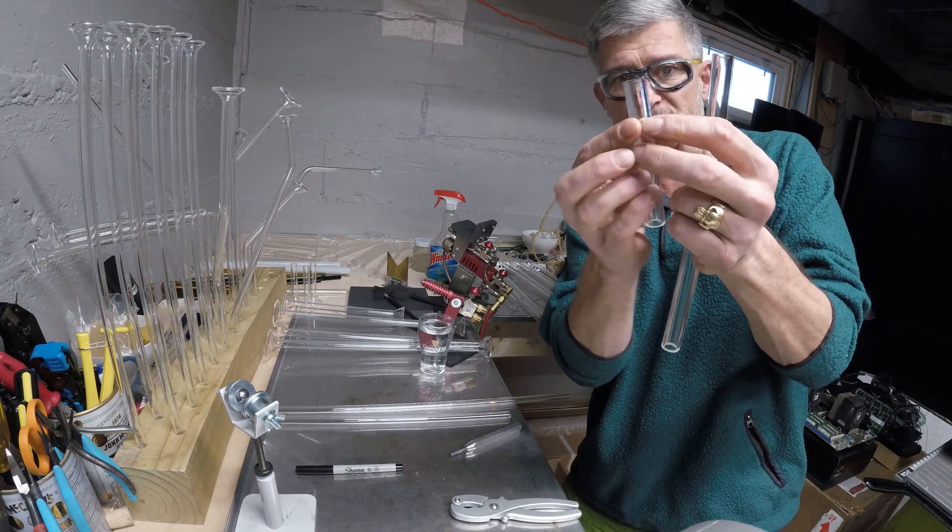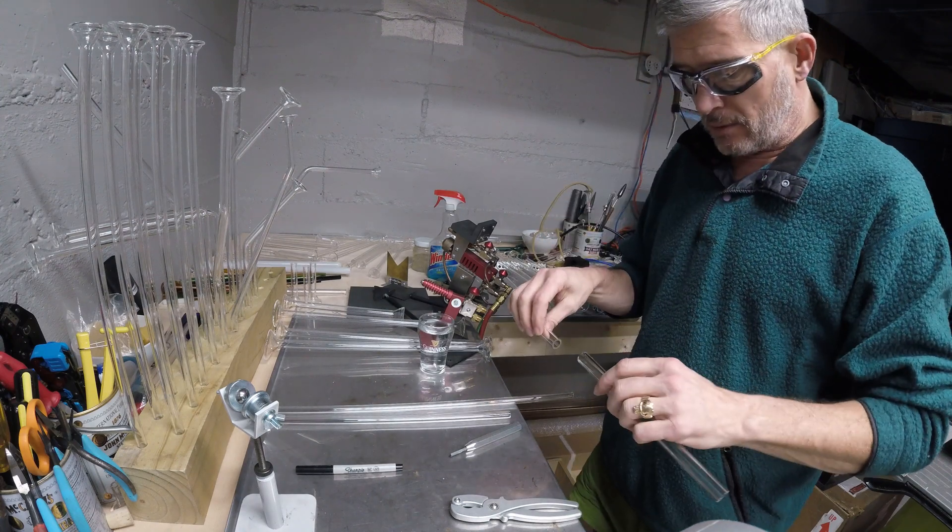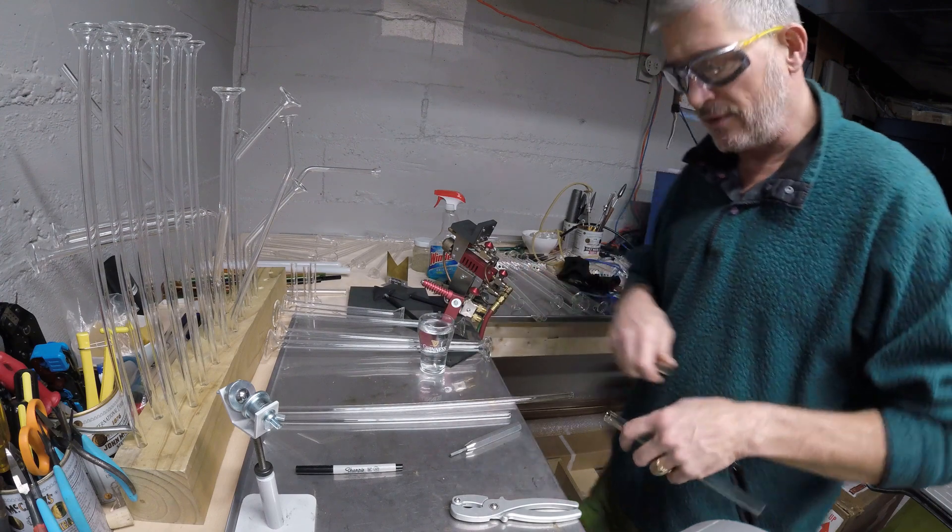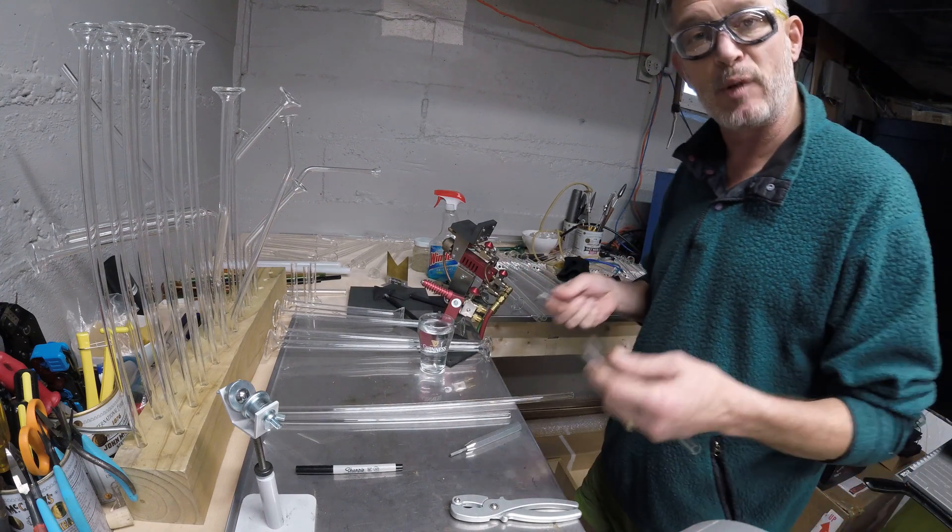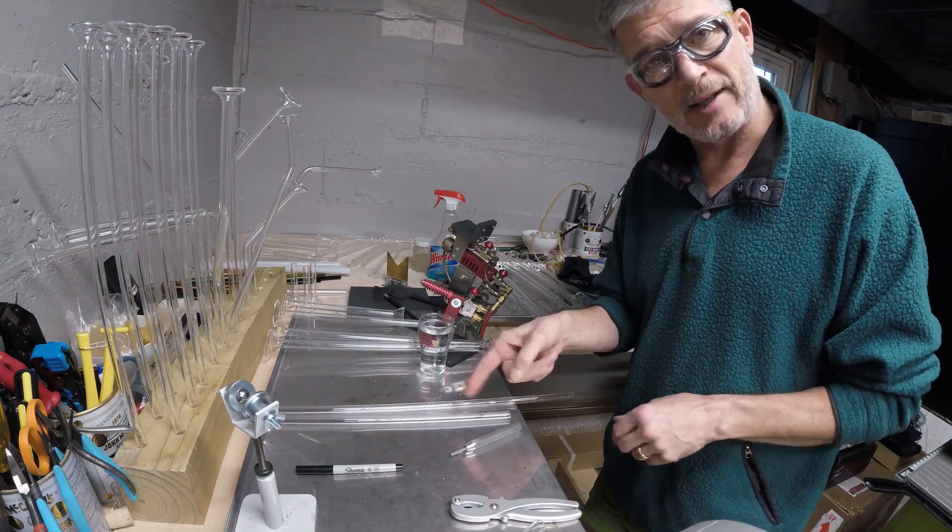Now sometimes it's not 90 degree. Sometimes you might have a chip. But that is the basic way you do it. You do it a couple of times, if you get the motion correct, it should be pretty clean. So that's 16mm. That was with that knife.